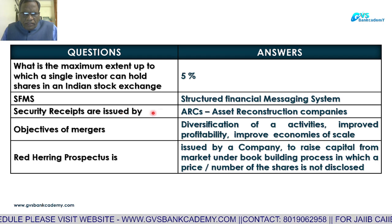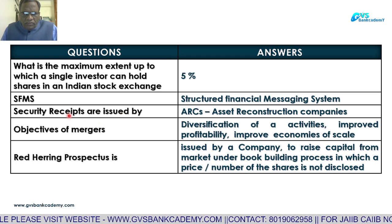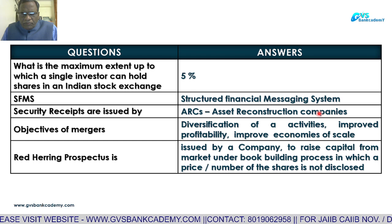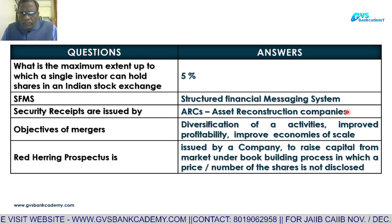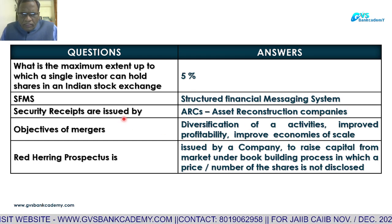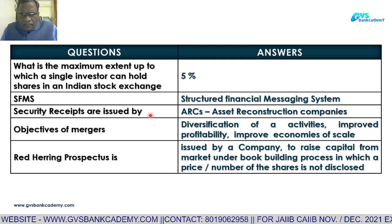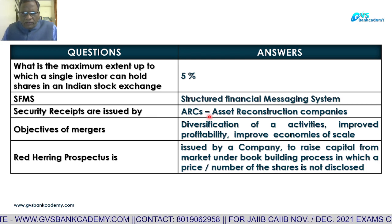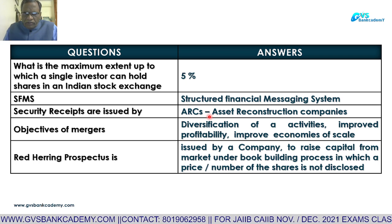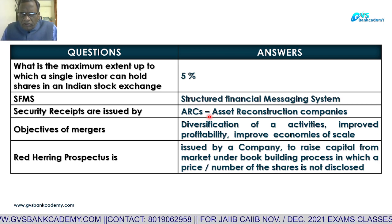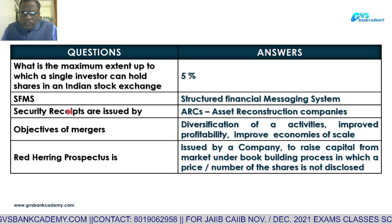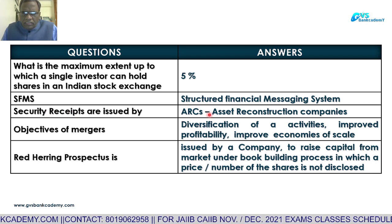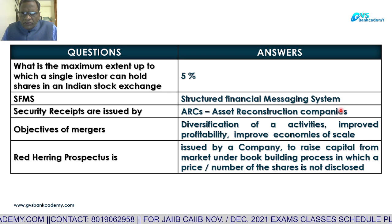Security Receipts are issued by ARCs — Asset Reconstruction Companies — to QIBs — Qualified Institutional Buyers — at the time of sale of NPA assets by banks to ARCs. Part of the amount is paid as cash by ARCs to banks, and for the remaining amount ARCs issue Security Receipts. This relates to asset reconstruction and the purchase of NPA assets.